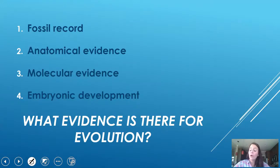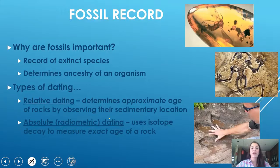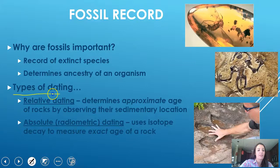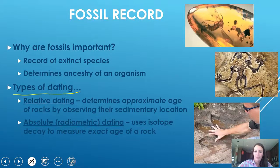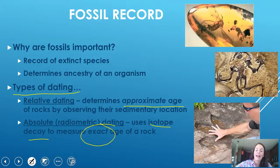There are four pieces of evidence for evolution. The first is the fossil record. Fossils are a record of extinct species, and there are two types of dating: relative dating, which gives an approximate age, and absolute dating, which uses isotope decay to measure the exact age of the fossil.